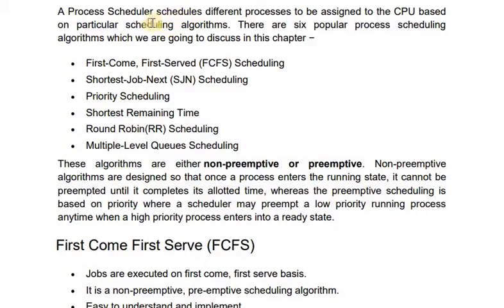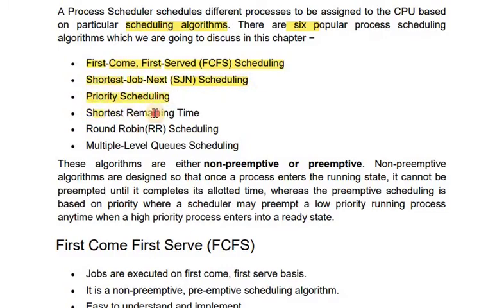If you use an operating system, we will discuss different scheduling algorithms. We will discuss six algorithms: first come first serve, shortest job next, priority scheduling, shortest remaining time, round robin, and multi-level queue scheduling.